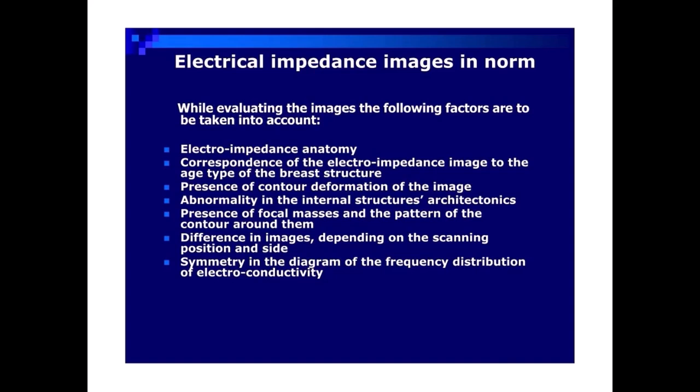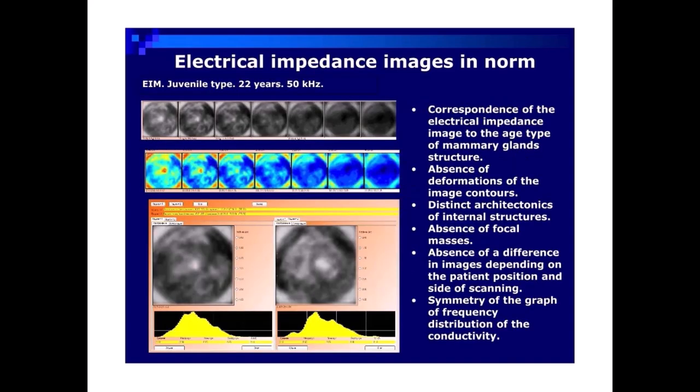Difference in images depending on the scanning position and side. Symmetry in the diagram of the frequency distribution of electroconductivity. EIM juvenile type, 22 years, 50 kHz.